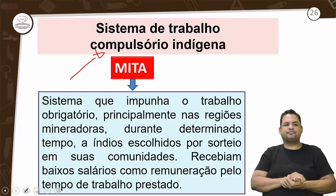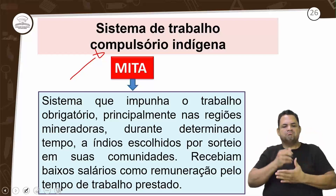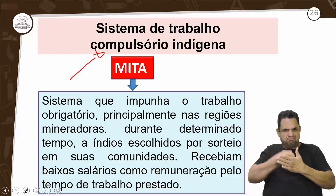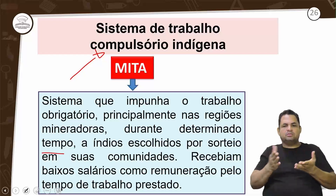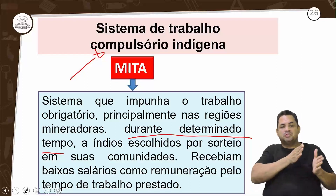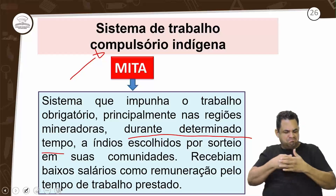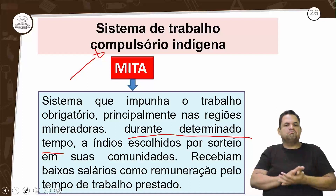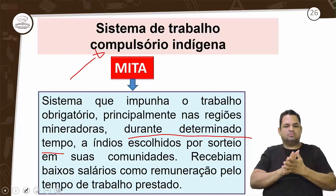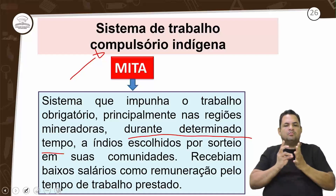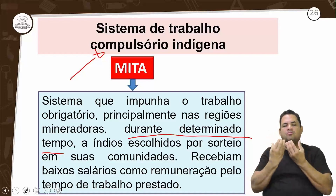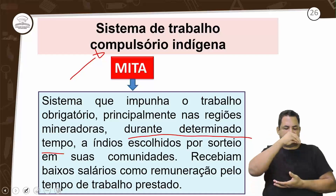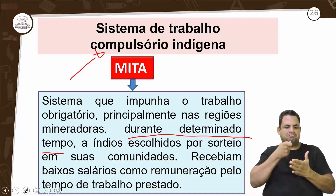A mita era o sistema que impunha o trabalho obrigatório, principalmente nas regiões mineradoras. Durante determinado tempo, a pessoa era obrigada a trabalhar na mineração. Os índios, escolhidos por sorteio em suas comunidades, recebiam baixo salário como remuneração pelo tempo de trabalho prestado.